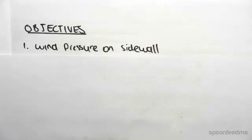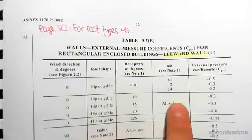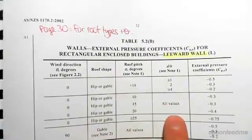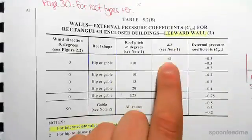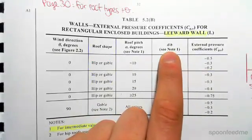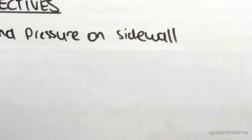The objective of this video is to find the wind pressure on the sidewall. I just want to quickly clarify something I didn't discuss in the previous video. For the leeward wall, there's a d-to-b factor I didn't explain. If you flip back two pages to page 30, you'll see the diagrams we saw before with the labels d and b.